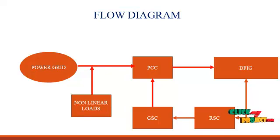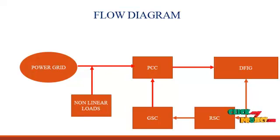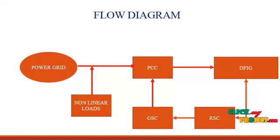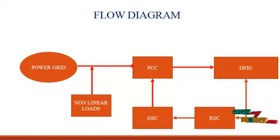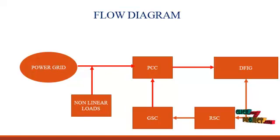In this flow diagram, the input source is a DFIG wind turbine. After that, the power grid is connected with the DFIG. In between the power grid, the non-linear load is connected at the point of coupling. In between the DFIG and power grid, the STATCOM is connected — that is, the Rotor Side Converter and Grid-Side Converter act as a STATCOM.